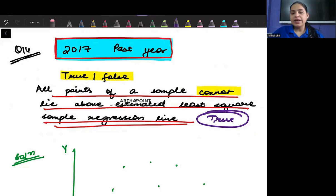It cannot lie in such a way that it is below all the estimated points. Right. Or all the points are above the regression line. So this is a correct statement. Am I clear with this? Okay.